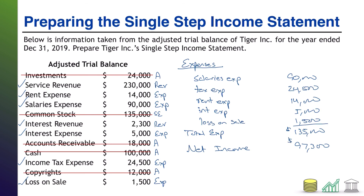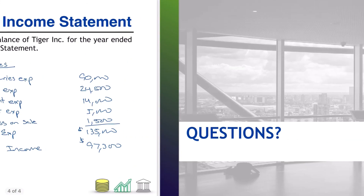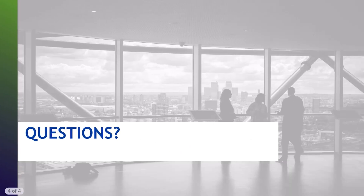And that is the end of our single-step income statement. You have a section for revenue — subtotal it. A section for expense — subtotal it. Take the difference between revenue and expense; that's your net income, and you are done. Hope you did well and found it helpful. Please join me for another video.